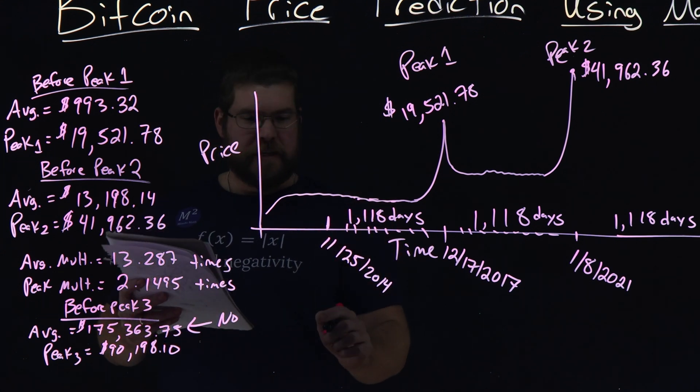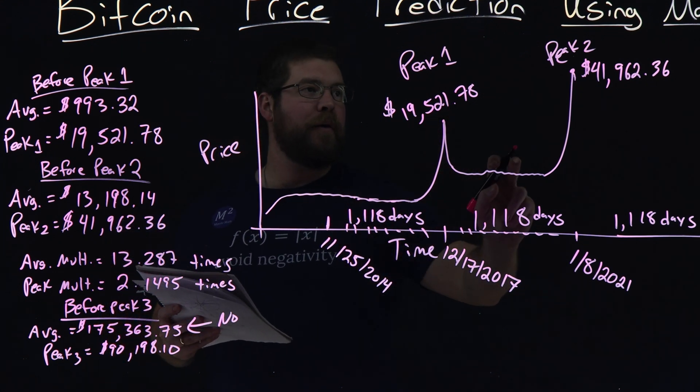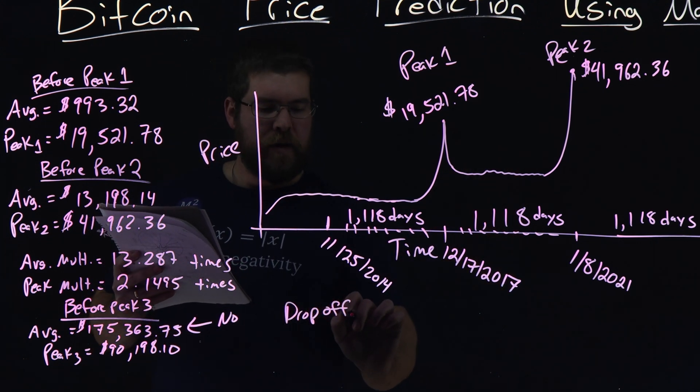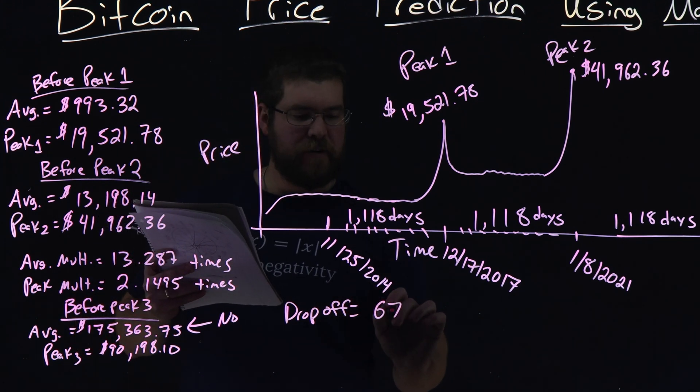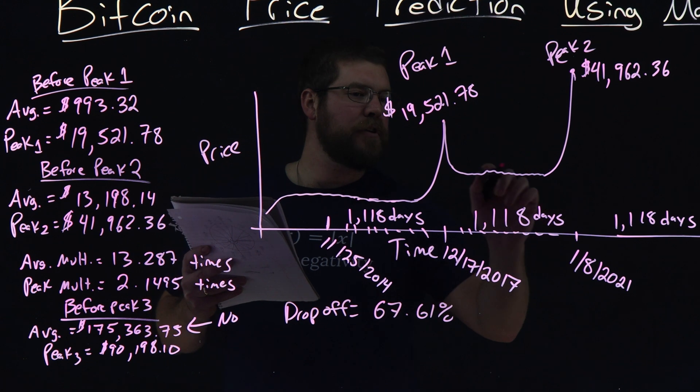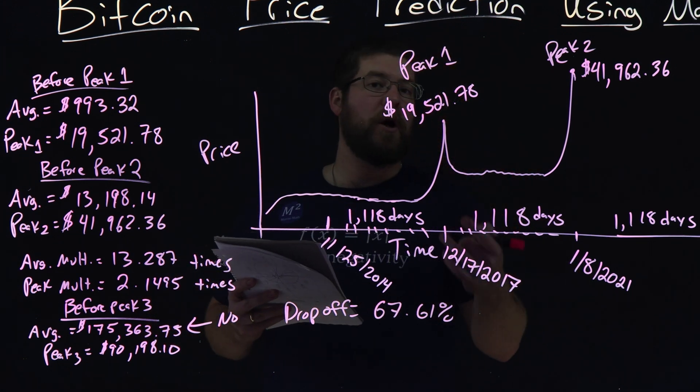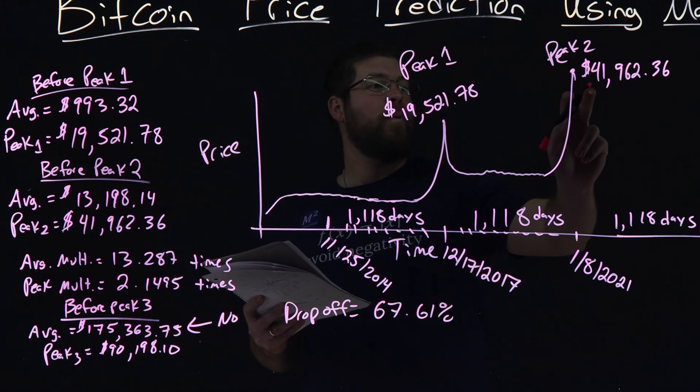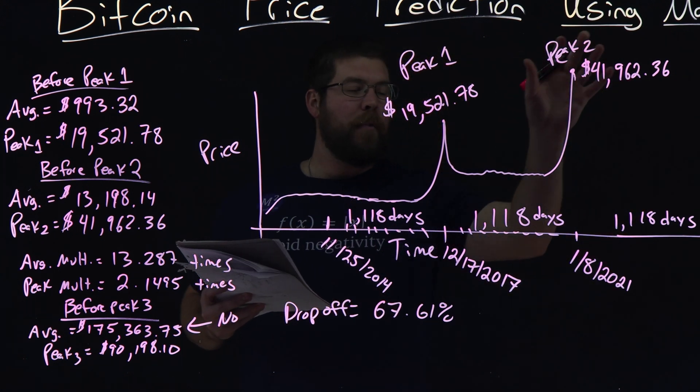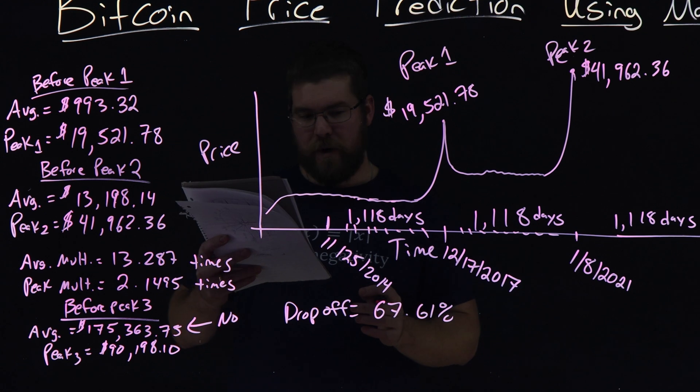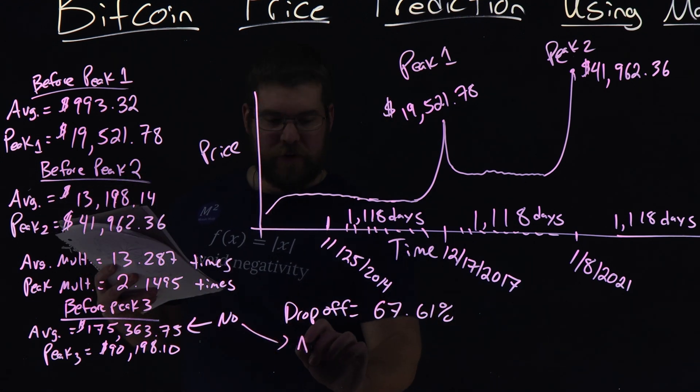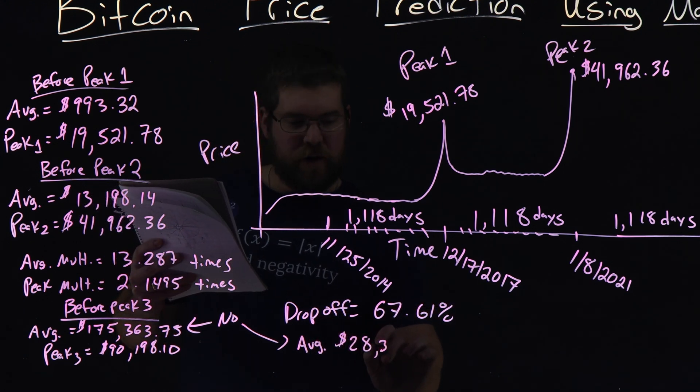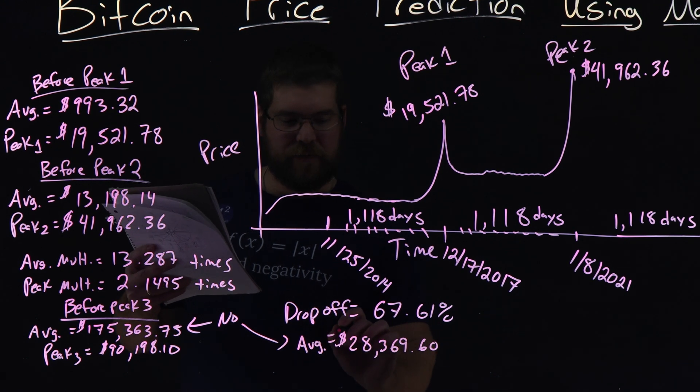So the peak drop-off percent from this peak, peak one to the before peak two average, the drop-off came to 67.61%. So this average right here was 67.61% lower than peak one. And so if we apply that, multiply the 41,962.36, multiply that by our drop-off of 67.61%, we get a new average before peak three, and that came out to be $28,369.60 approximately.